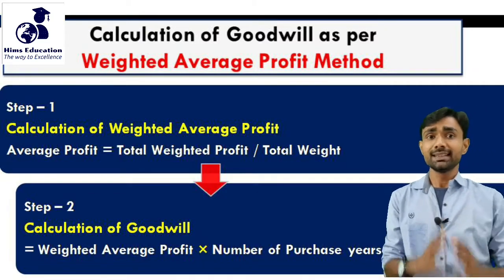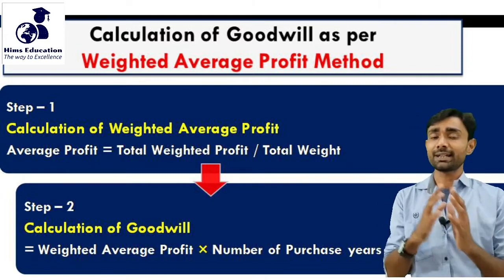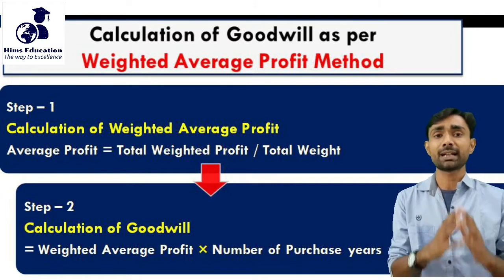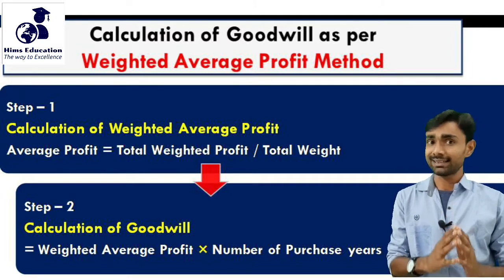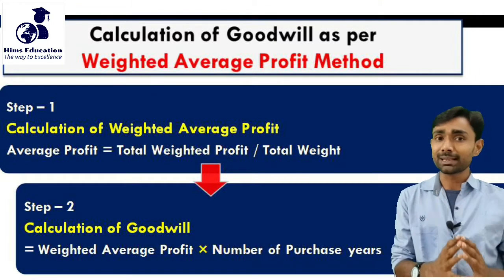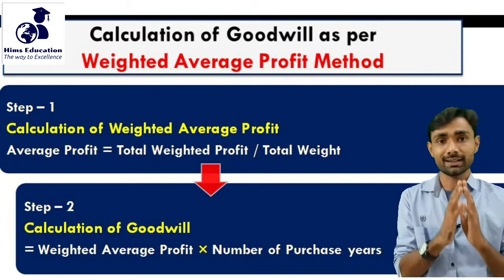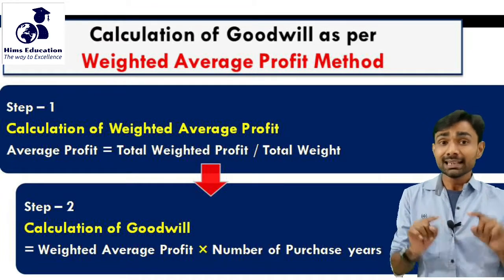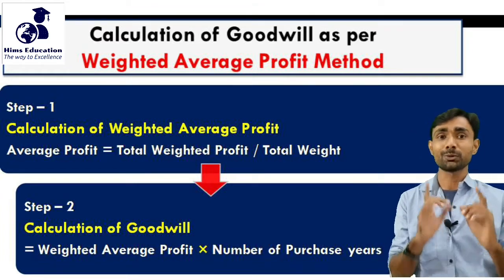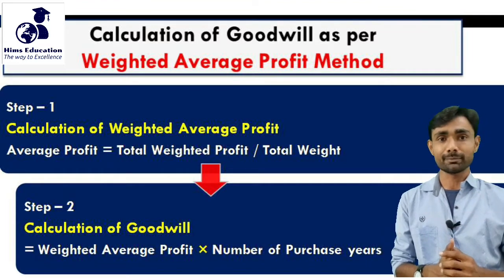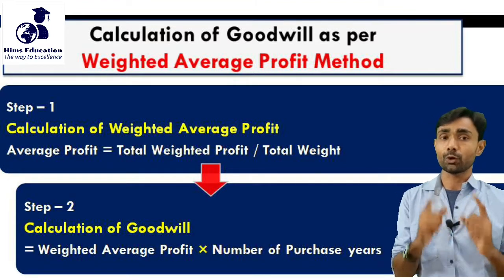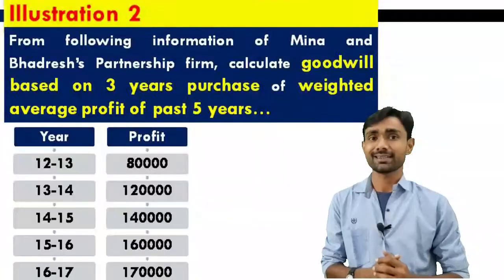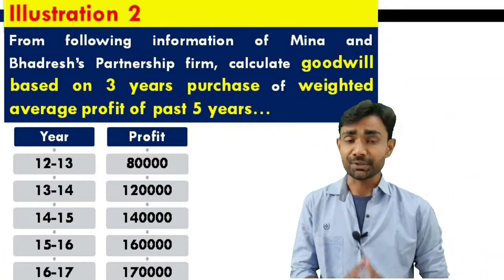Step number 2: Goodwill is equal to weighted average profit multiplied by number of purchase years. Now let's see a question for calculating goodwill based on weighted average profit method. The question is: from the following information, compute the value of goodwill of Meena and Bhadresh partnership firm, based on three years purchase of weighted average profit of last five years.